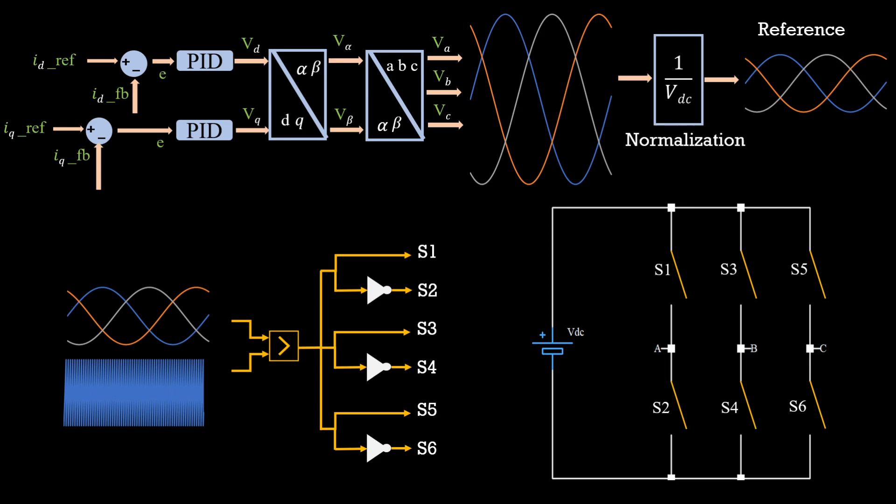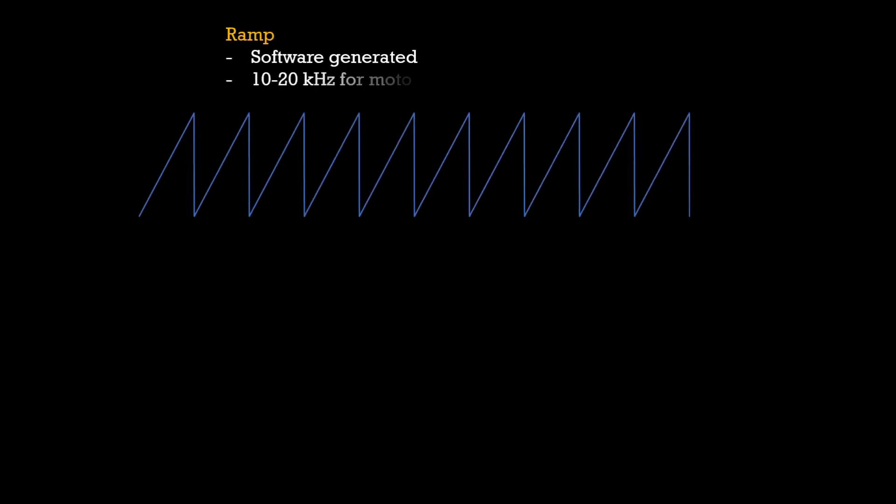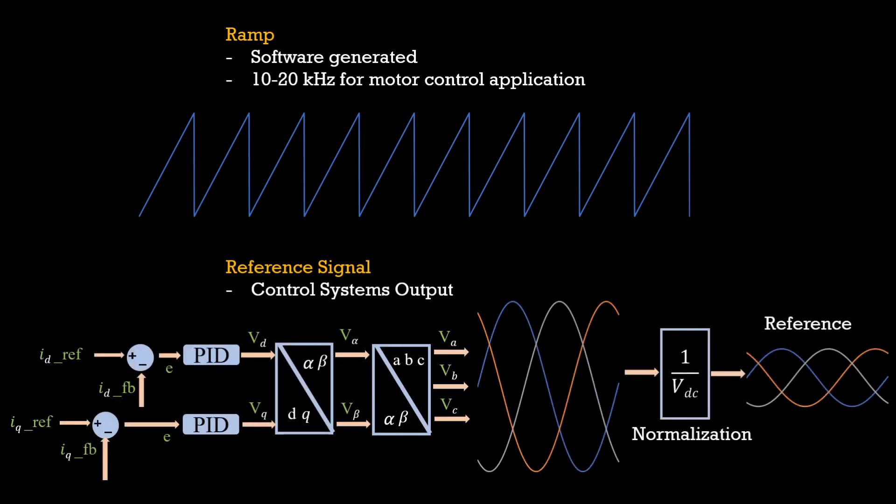What you should understand is, this is nothing but a reference signal. We can compare these reference signals to our ramp and we will get the switching pattern that we should apply to the switches. Ultimately, we will get the inverter to produce our desired waveform given by control output Vabc. So, we have answered two more questions.